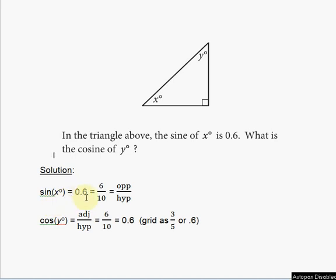Now, 0.6 can be expressed as 6 divided by 10. So 6 over 10 equals opposite over hypotenuse. That means this side is 6 in length and the hypotenuse is 10 in length.